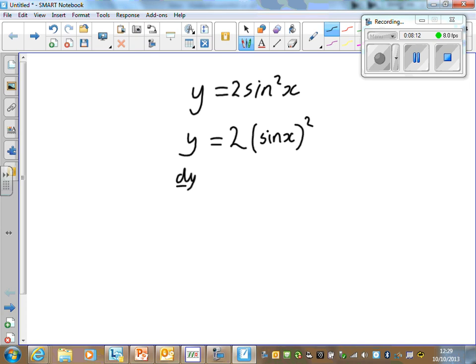So now we can differentiate it. We've got something squared. How do we differentiate something squared? Bring the power down, take one off the power. So we can bring the power down to get 2 times 2 is 4. Take one off the power, and we get to the power of 1. But we need to multiply it by the derivative of that something. The derivative of sin x is actually equal to cos x.